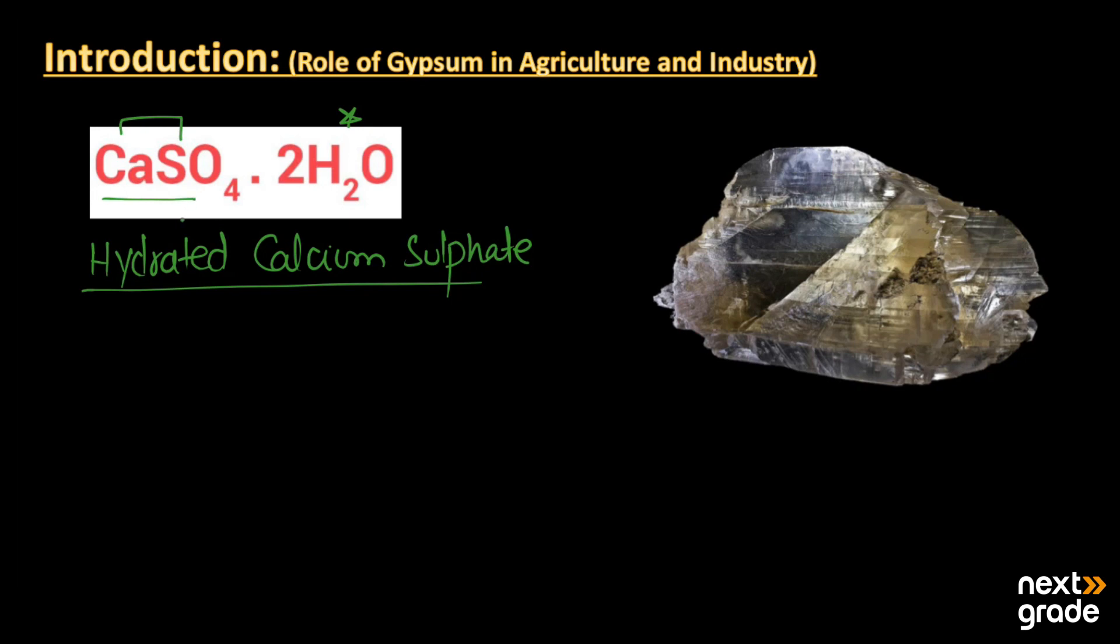It is a mineral that occurs in large deposits throughout the world. Basically, gypsum is the main source for calcium and sulfur. So two main constituents can be gained from gypsum.